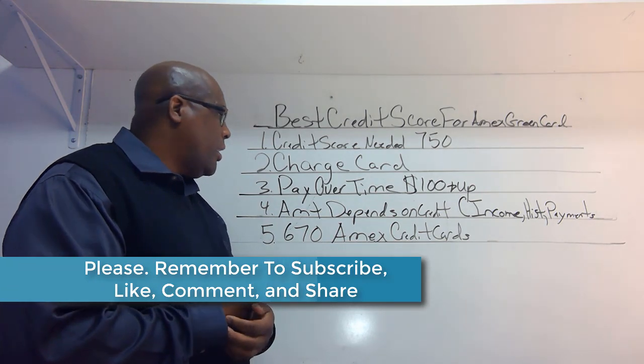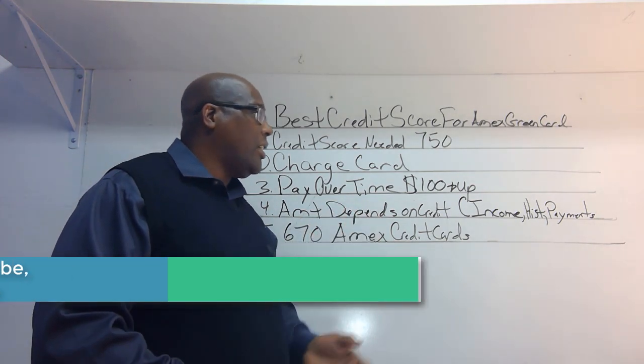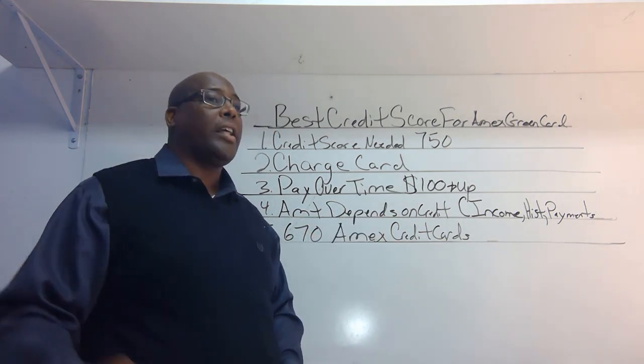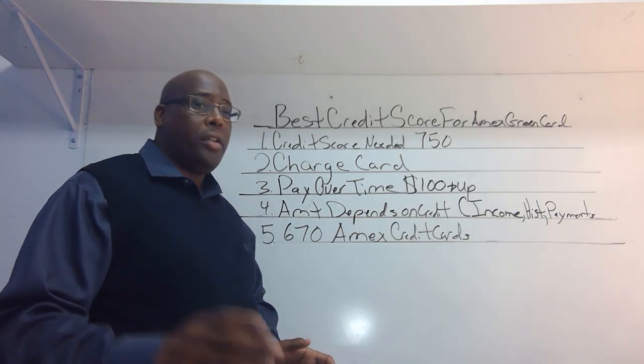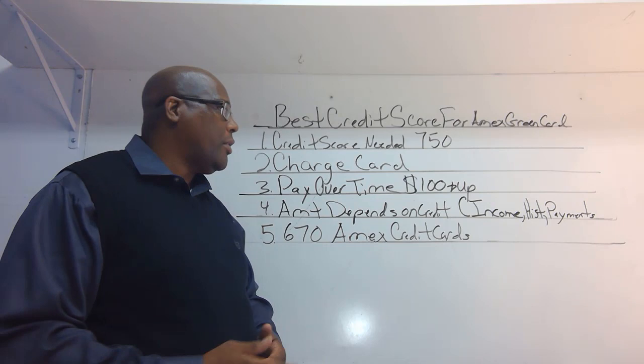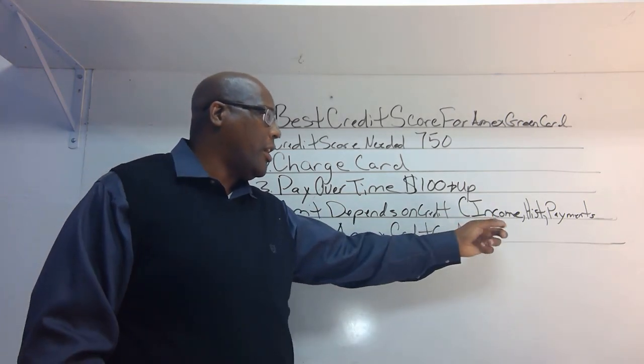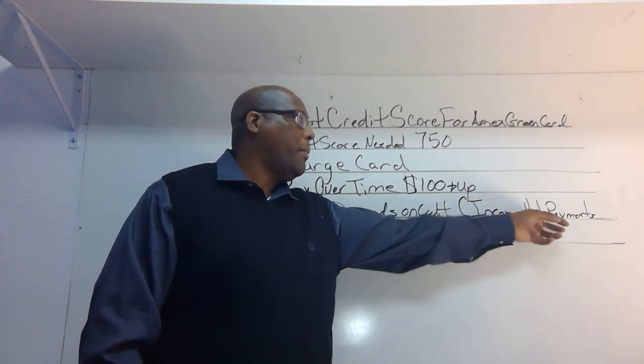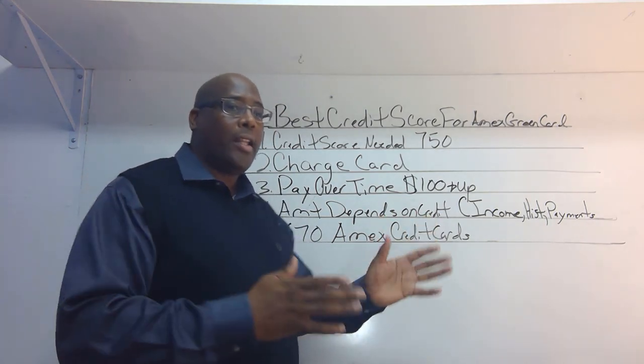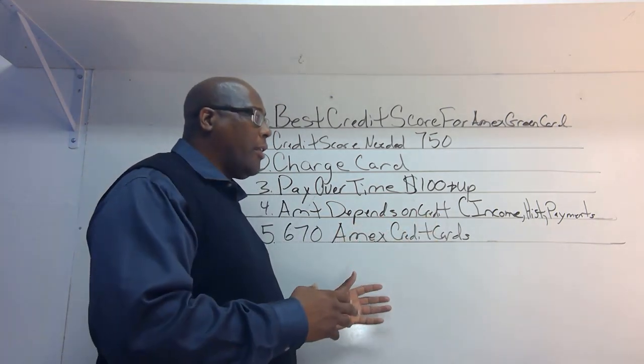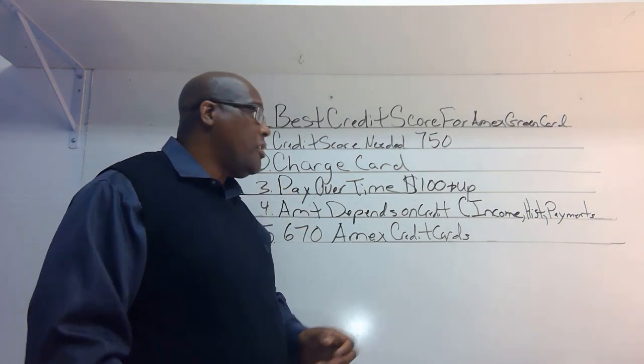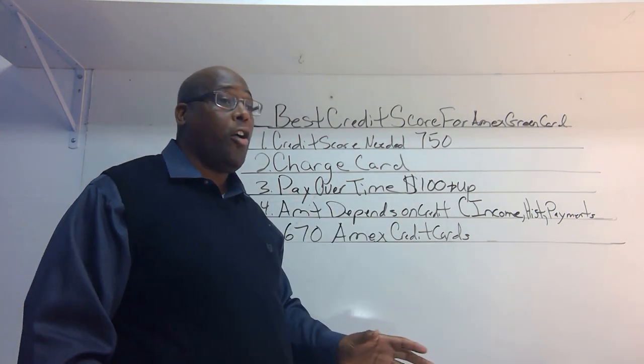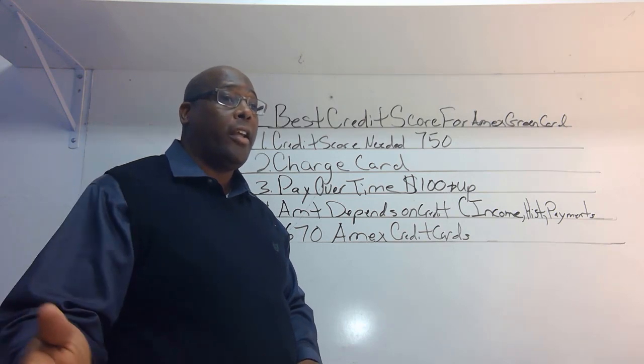Now, another thing is the amount that it gives you. Like I said, a lot of people publicize when they got it, but the thing about it, the amount of money they're willing to give you depends on your income and your credit history and your payments. So if you have low credit lines on your credit file, and even though you may have a 750 credit score, you may get the American Express green card, but you may get a low limit on it.